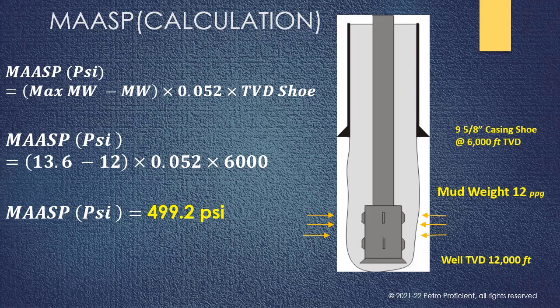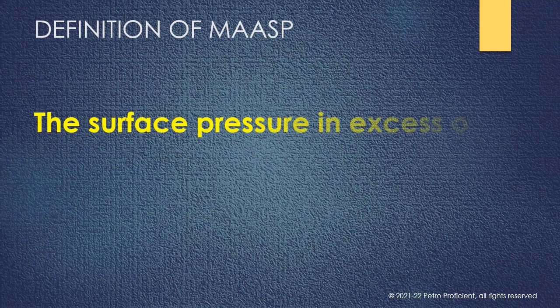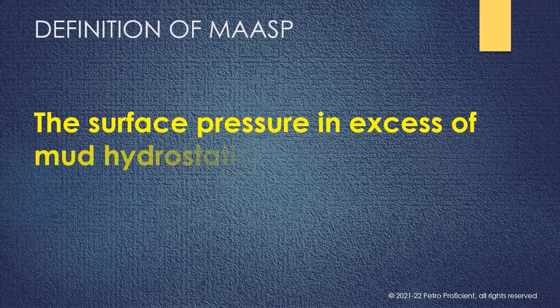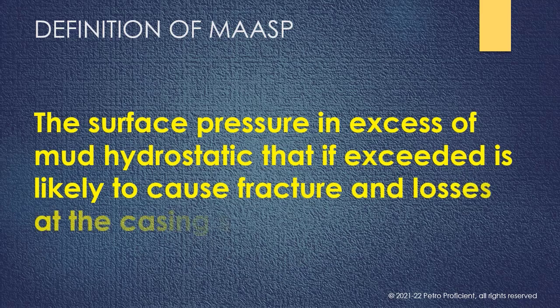In summary, MASP is defined as the surface pressure in excess of mud hydrostatic that, if exceeded, is likely to cause fracture and losses at the casing shoe.